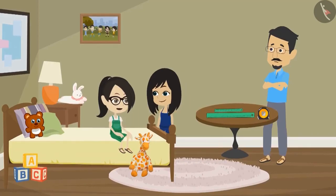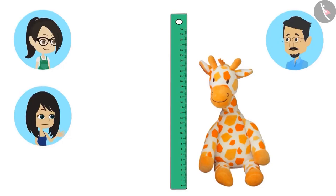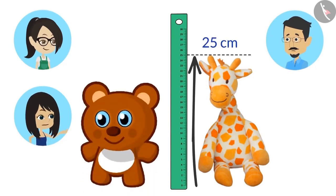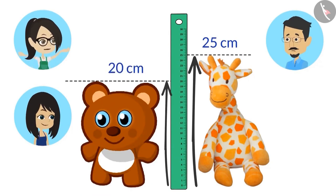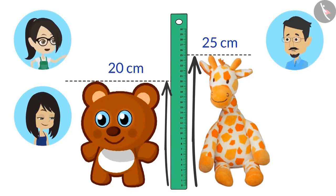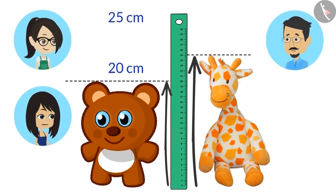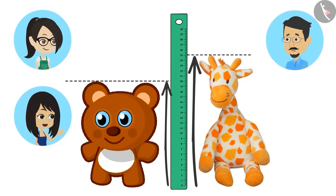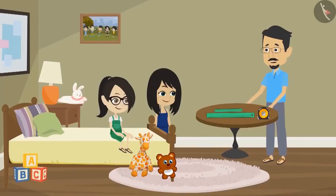I will measure the length of my toy giraffe. Now let us see what is its length. Your giraffe is 25 centimeters tall. Now I will measure the height of my bear. Your bear is 20 centimeters tall. Can you both tell how short is the bear compared to the giraffe? We will subtract the height of the bear from the height of the giraffe. The height of the giraffe is 25 centimeters and the height of the bear is 20 centimeters. Subtracting 20 from 25 leaves us with 5 centimeters. The giraffe is 5 centimeters taller than the bear. You both answered it correctly.